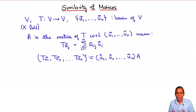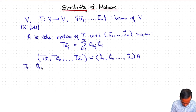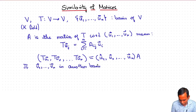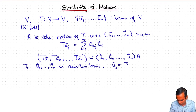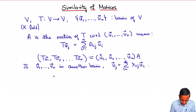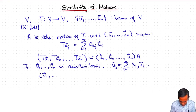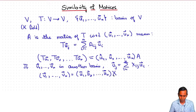Now let's see what happens to A under a change of basis. Suppose we have another basis v1, v2, ..., vn. We can expand these new basis elements in terms of the old basis: v_j = sum over i from 1 to n of x_ij * u_i. In vector notation, this reads (v1, v2, ..., vn) = (u1, u2, ..., un) times X, where X is the change-of-basis matrix.